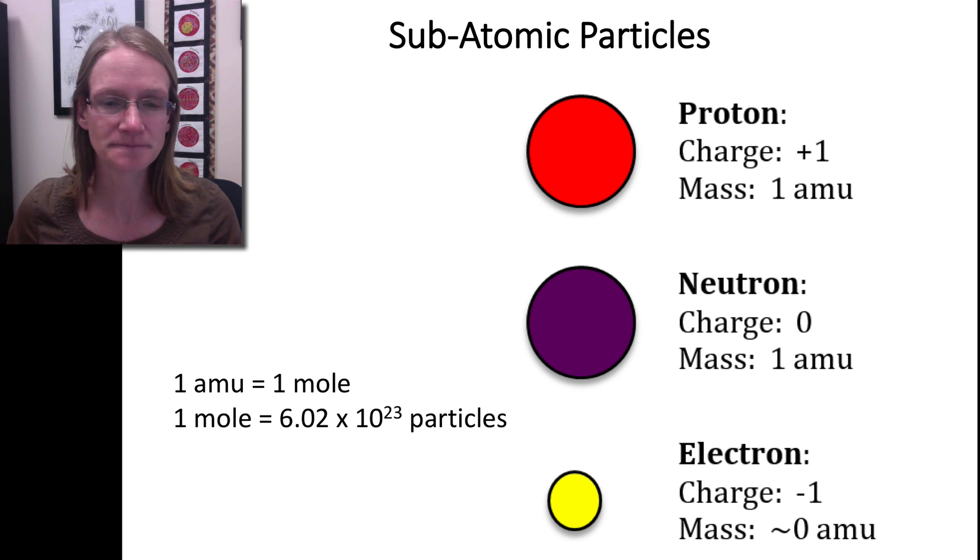In relation, we can look at an electron and see it's very small. It's actually so small that it's almost close to zero atomic mass units—really small in comparison.